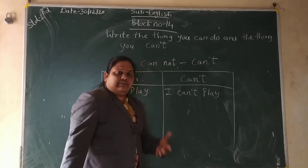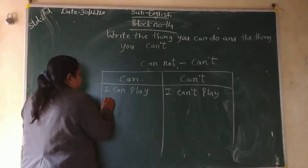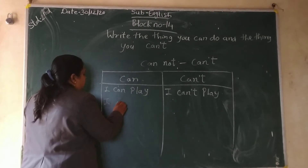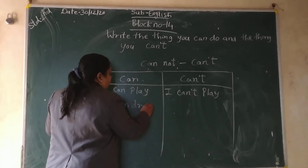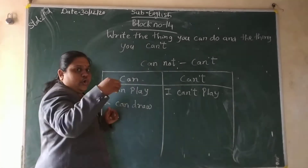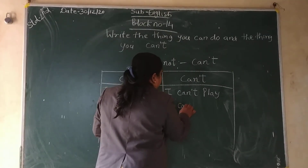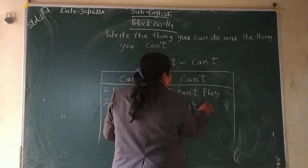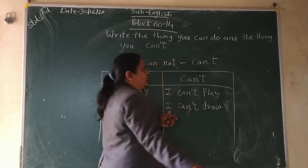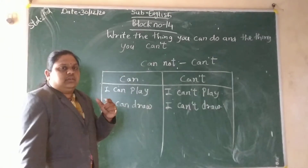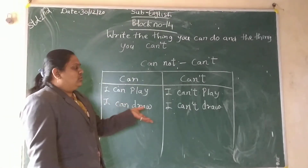I can't play because I have hurt my leg. Then: I can draw. I can draw — because if you know the pain, you can draw it very easily. If you don't know, so can't: I can't draw.